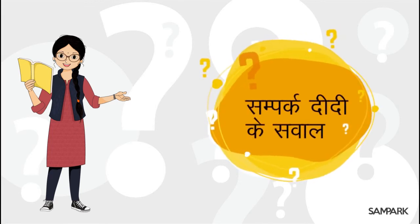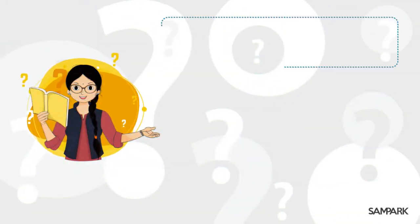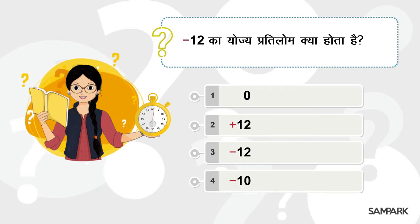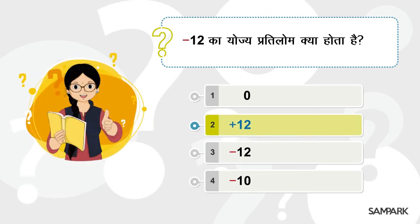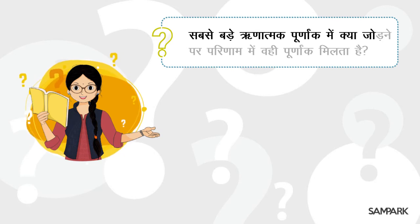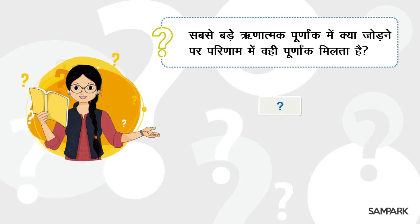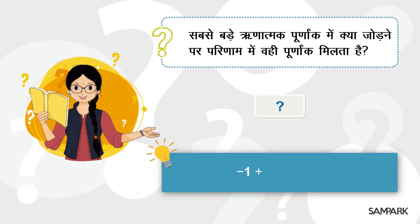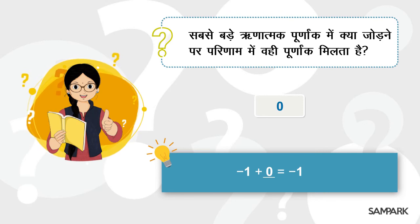चलिए अब कुछ सवाल जवाब हो जाएँ। माइनस 12 का योज्य प्रतिलोम क्या होता है? विकल्प दो सही उत्तर है — माइनस 12 का योज्य प्रतिलोम है प्लस 12। सबसे बड़े ऋणात्मक पूनांक में क्या जोड़ने पर परिणाम में वही पूनांक मिलता है? सबसे बड़ा ऋणात्मक पूनांक हुआ माइनस एक। माइनस एक में जीरो जोड़ने पर माइनस एक मिलता है। बिल्कुल ठीक।